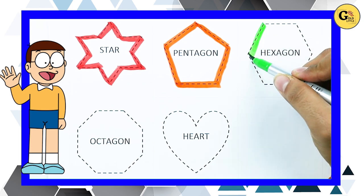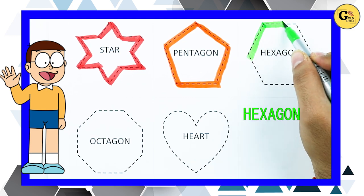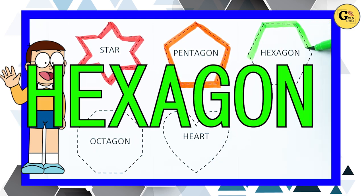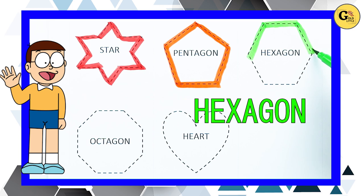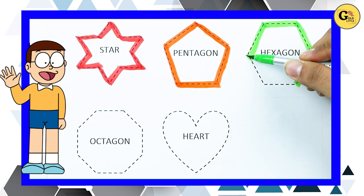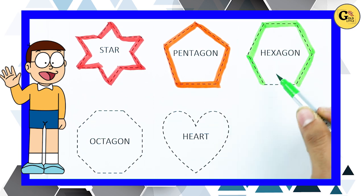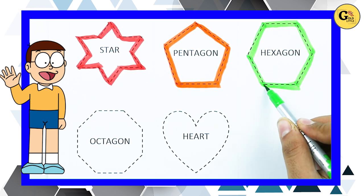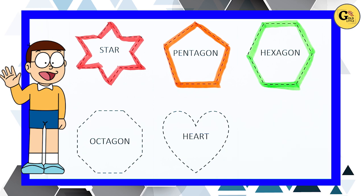Hexagon: one line, two line, three line, four line, five line, six line. It's a hexagon.